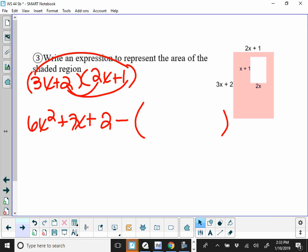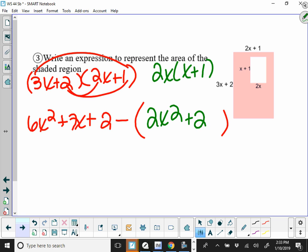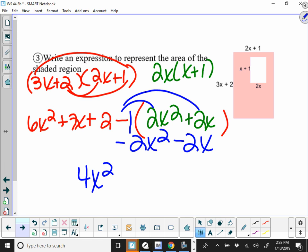Minus the area of the inside. The inside is going to be 2x times x plus 1, which gives me 2x squared plus 2x. So when we distribute the negative one, that makes that a minus 2x squared and a minus 2x. So 6x squared minus 2x squared is going to give us 4x squared, and 7x minus 2x is going to give us 5x plus 2.